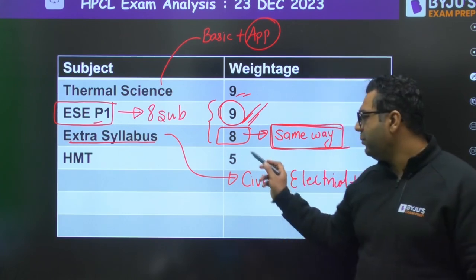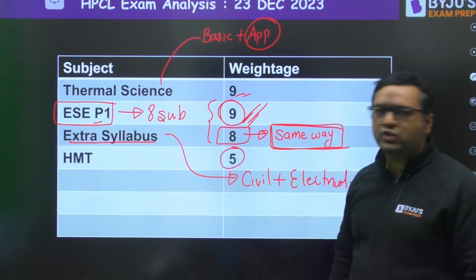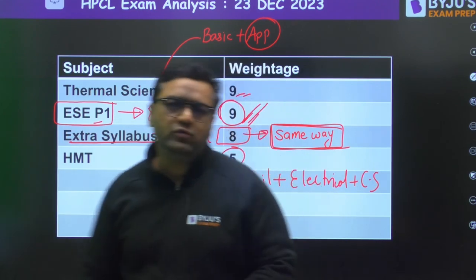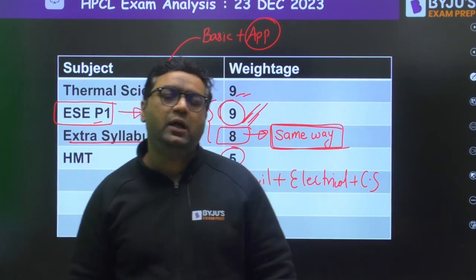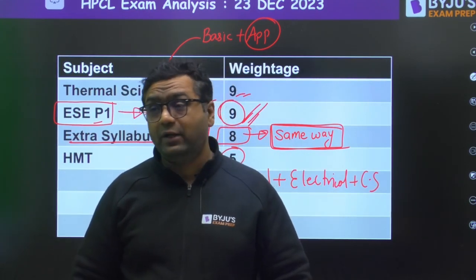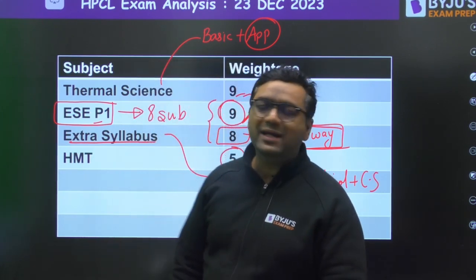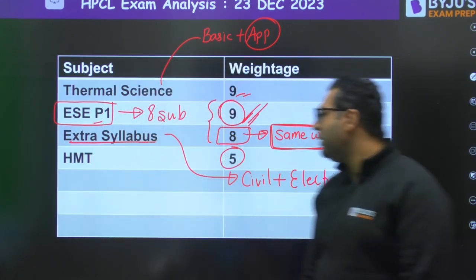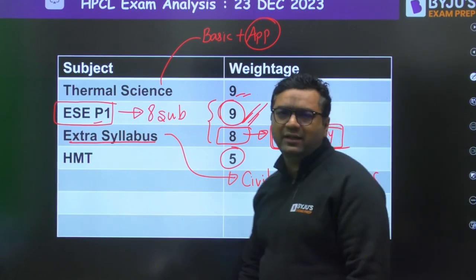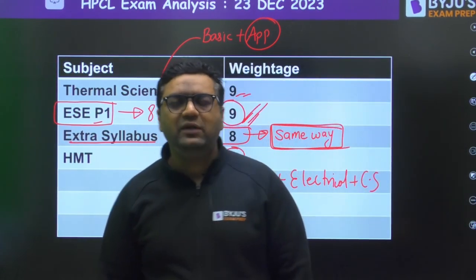From Heat and Mass Transfer, there were five questions. One question was from fin analysis and one from shape factor. That is how the paper was framed — total 85 questions, and I have given you the subject-wise weightage.